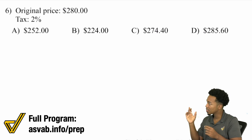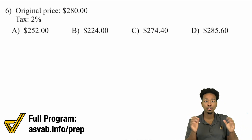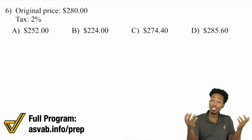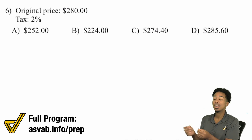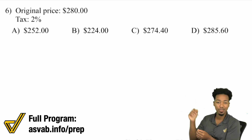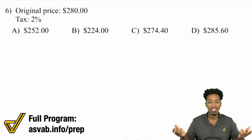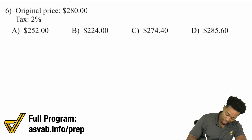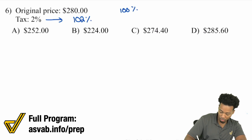Here we're looking at taxes. In this specific problem, we have a price for an item and a 2% tax. That means you're not paying 100% anymore — with a tax, you're paying more. So we apply the 2% on top of 100%. A hundred percent is what you would have paid originally, and the 2% is the tax, giving us 102% as the final percentage you pay.